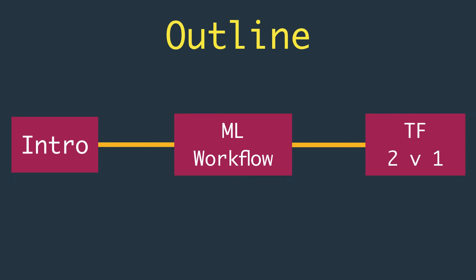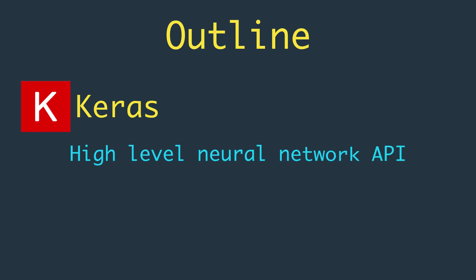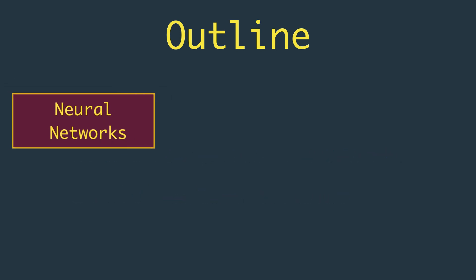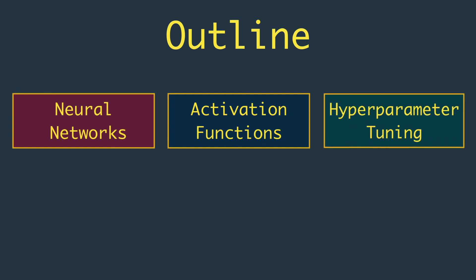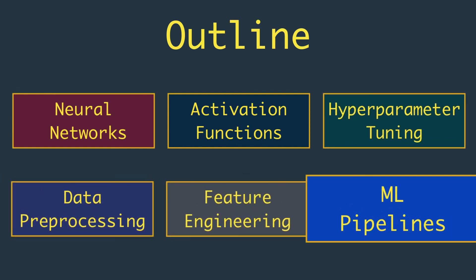We will compare TensorFlow 2 with its previous version, TensorFlow 1, to understand the improvements in the latest version. Keras is a high-level neural networks API that runs on top of TensorFlow, so we will practically explore tf.keras, which is TensorFlow's implementation of the Keras API specification. Neural networks, activation functions, hyperparameter tuning, data preprocessing, feature engineering, and machine learning pipelines will also be part of this video series.